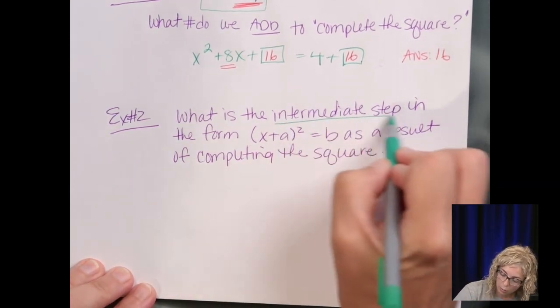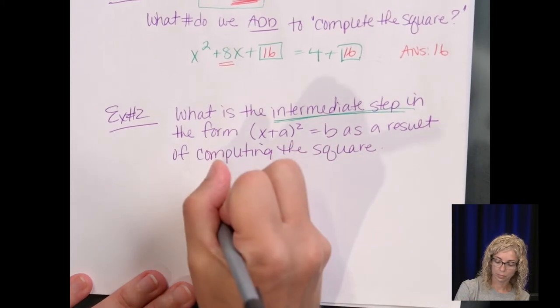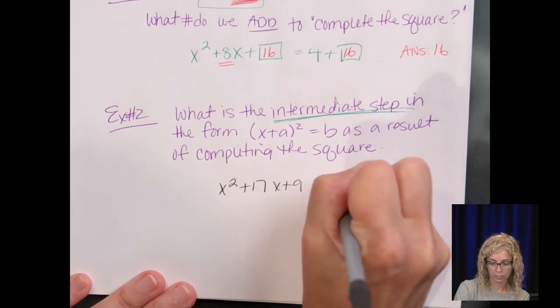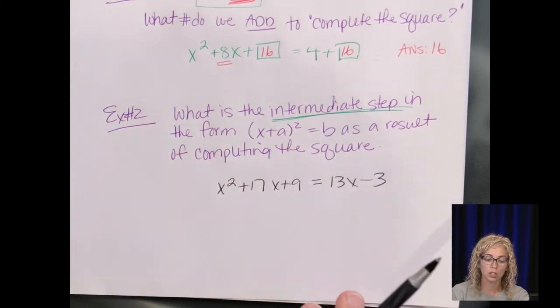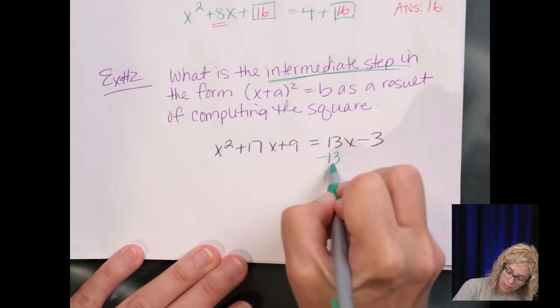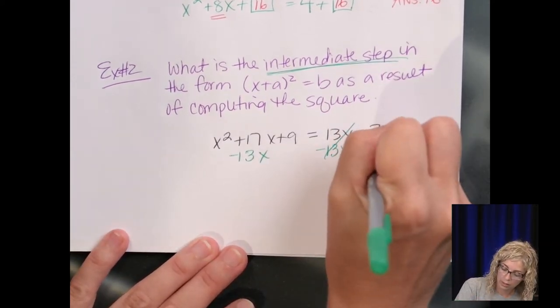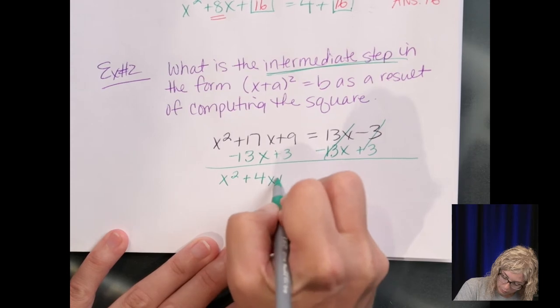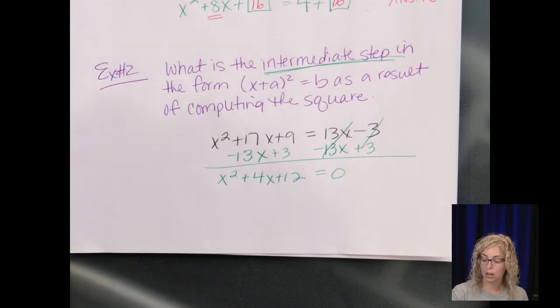The intermediate step. So we're not solving for x just yet. The equation looks like x squared plus 17x plus 9 equals 13x minus 3. So the first thing you want to do is put it in standard form. We want to set equal to 0. I'm going to subtract the 13x from its like term on the left to get rid of it on the right to make it 0 and add the 3. So we have x squared plus 4x plus 12 equals 0.